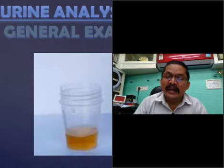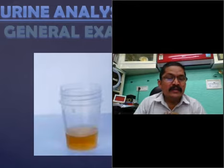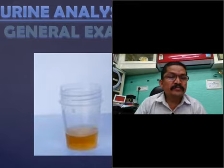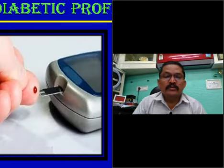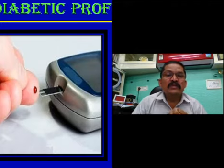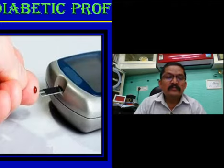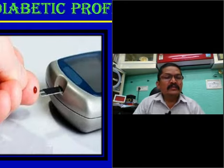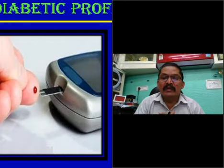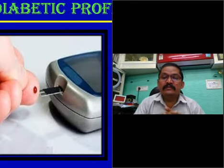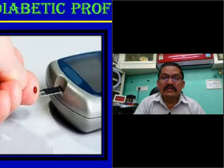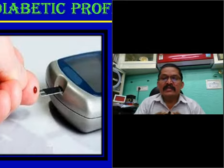Regarding urine analysis, that was already described in our earlier class. So let us look at the diabetic profiles. On examination, if the fasting blood sugar level is less than 110, and if the PPBS is less than 160 milligram percent, the case is a non-diabetic one.